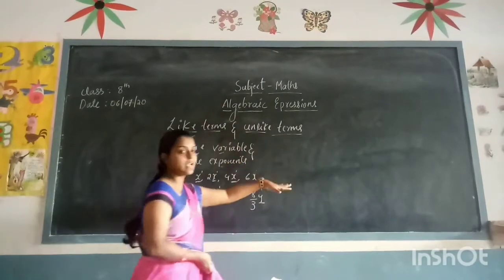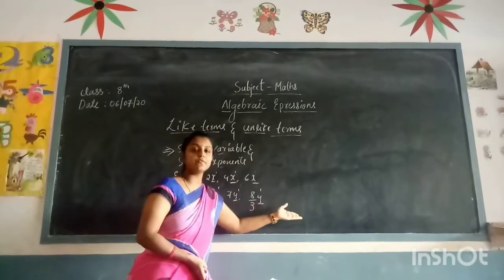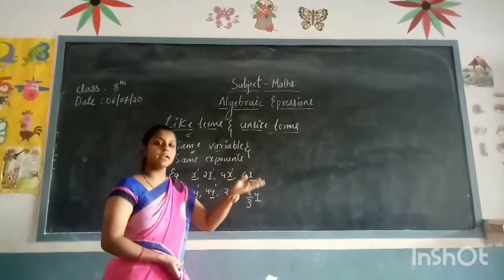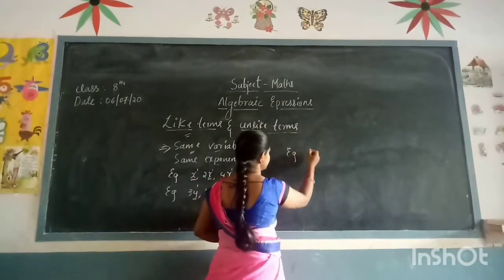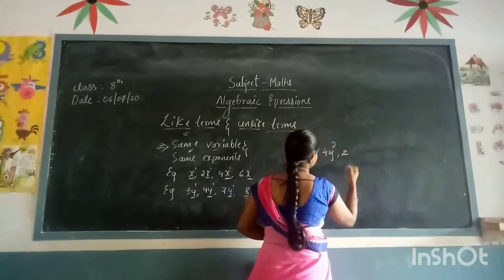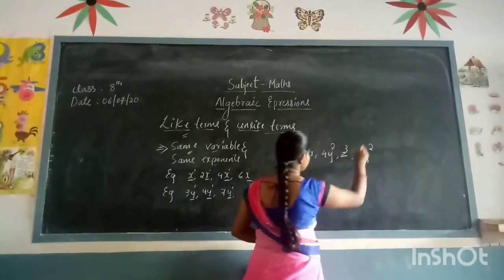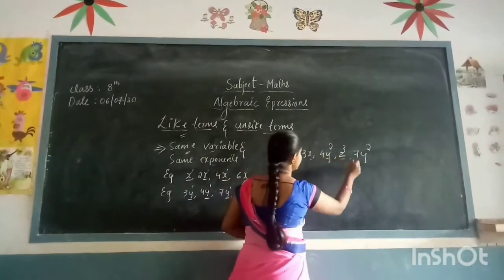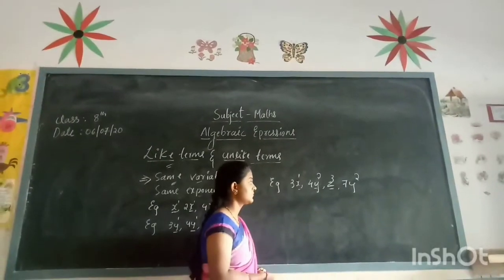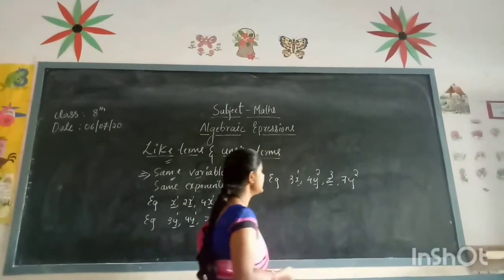What do you mean by unlike terms? Unlike terms is opposite to like terms — they may have different variables and different exponents. That is called unlike terms. For example, 3x, 4y squared, z, q, 7y squared — here the variables are different, such as x and y, so they are called unlike terms.